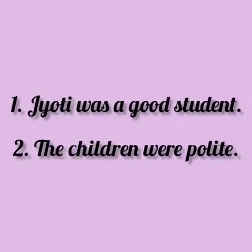Jyoti was a good student. The children were polite. So in these sentences, the words was and were are verbs — we can say that these are helping verbs. इन दोनों sentences past tense, भूत काल की बात कर रहे हैं. Jyoti was a good student — Jyoti एक अच्छी विद्यार्थी थी. The children were polite — बच्चे विनम्र स्वभाव के थे.